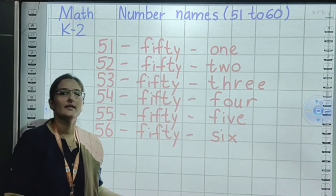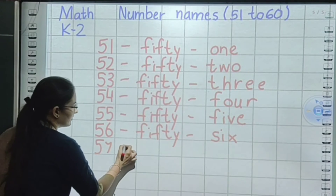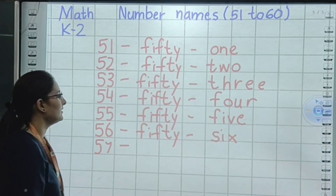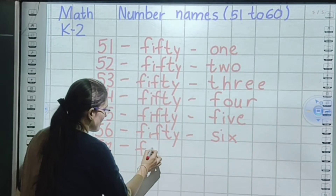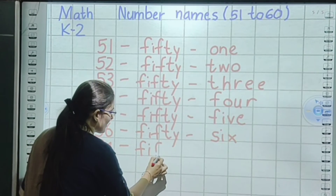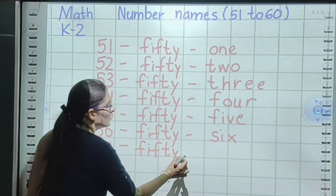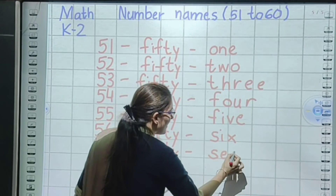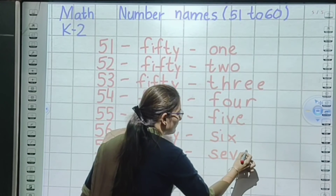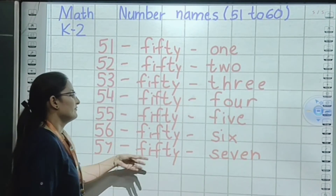Next number: 56. Small sleeping line. Again the same spelling: F, I, F, T, Y — fifty. Small sleeping line. F should be small. Spelling of 6: S, I, X — six. So 56 is fifty-six.